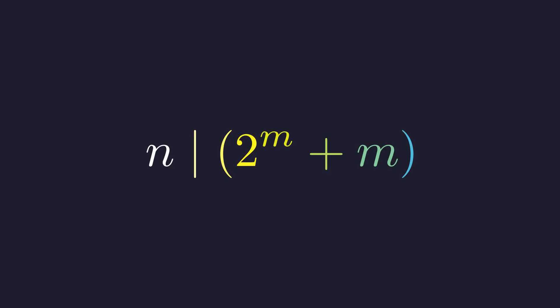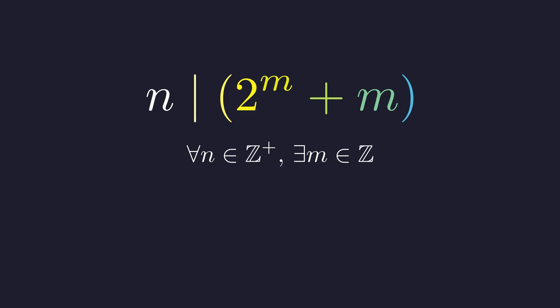This is problem N7 from the 2006 International Mathematical Olympiad shortlist. It makes a bold claim. For any positive integer n, there exists an integer m such that n divides 2 to the power m plus m. This seems unlikely. How can one guarantee such an m exists for every conceivable n? Let's construct the proof.